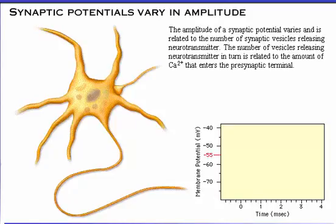The amplitude of a synaptic potential varies and is related to the number of synaptic vesicles releasing neurotransmitter. The number of vesicles releasing neurotransmitter in turn is related to the amount of calcium that enters the presynaptic terminal.